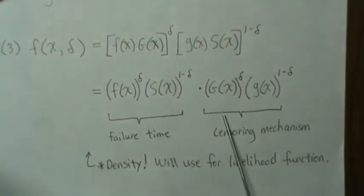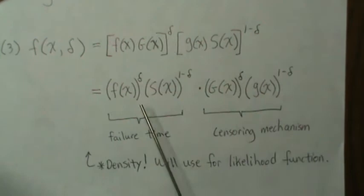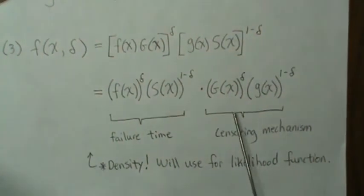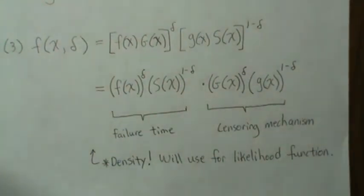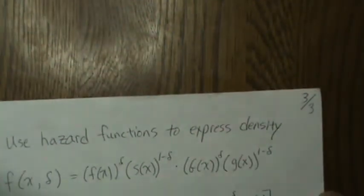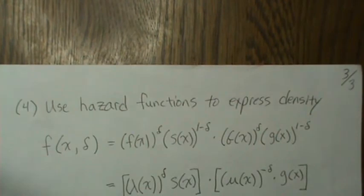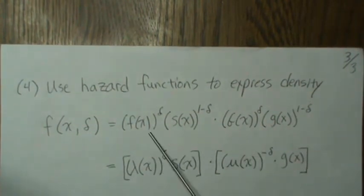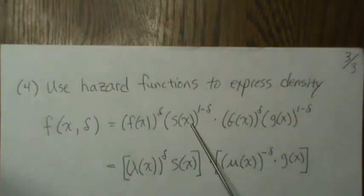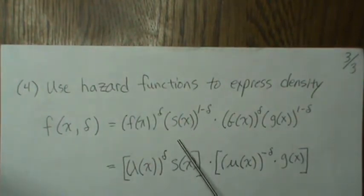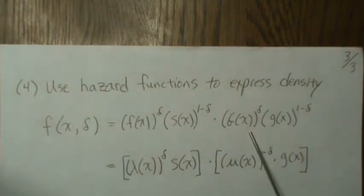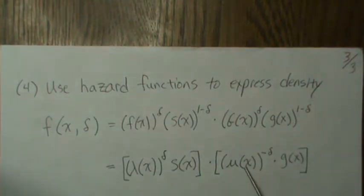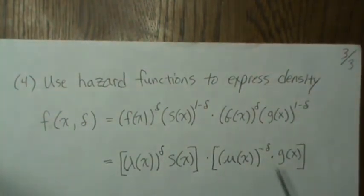So this is also the likelihood. Now there's some parameter associated with the failure time — we can call it theta — and the parameter associated with the censoring mechanism is phi, or something like that. Some people like to express the density through hazards, so we can rewrite this. The failure time piece can be broken up into S times S of x to the power delta, and combined with the density term gives you the hazard. You can do the same thing for the censoring mechanism — bringing delta down to get the hazard for the censoring mechanism.